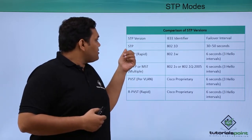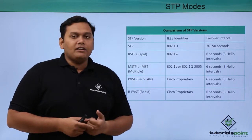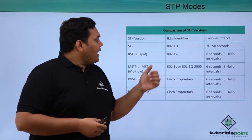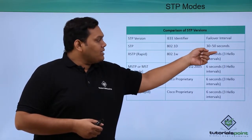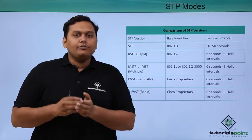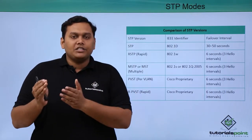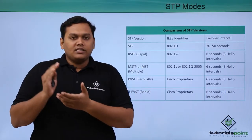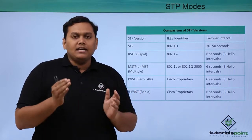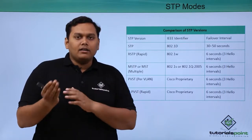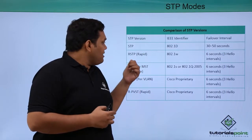The first mode is STP — Spanning Tree Protocol — with the IEEE identifier 802.1d and a failover interval of 30 to 50 seconds. That means if no STP message is received within 30 to 50 seconds, an error will be triggered.